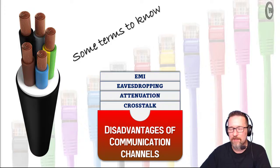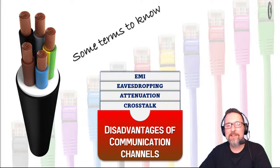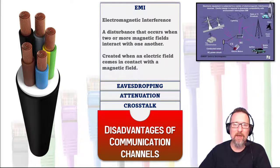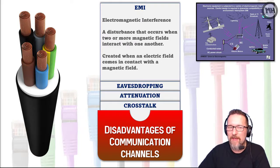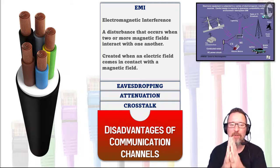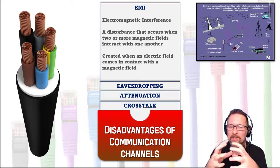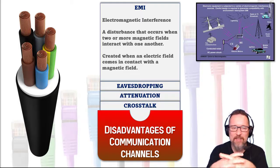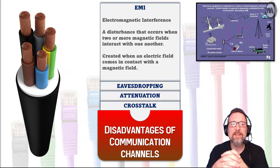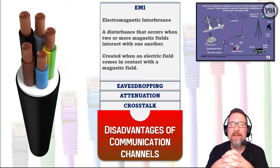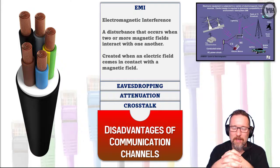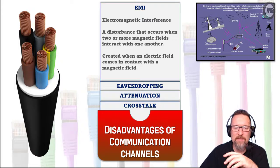Number one: EMI. EMI stands for electromagnetic interference, defined as a disturbance that occurs when two or more magnetic fields interact with one another. It is created when an electric field comes in contact with a magnetic field.